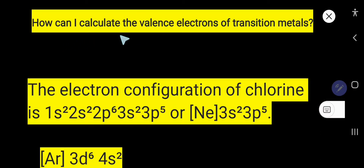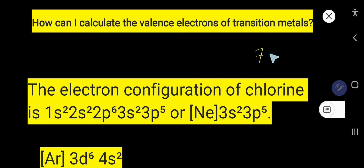How can you calculate the valence electrons of transition metals? First, consider chlorine — it is not a transition metal but a non-metal and a main group element. For main group elements, the valence electron count is equal to the group number.